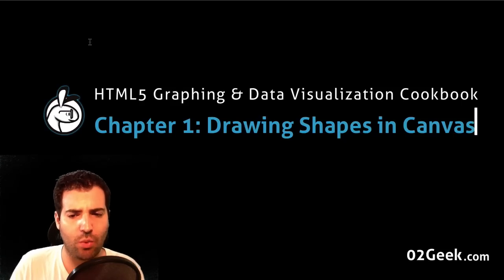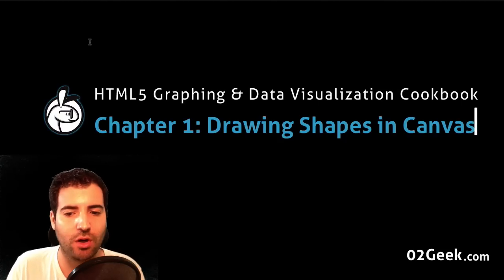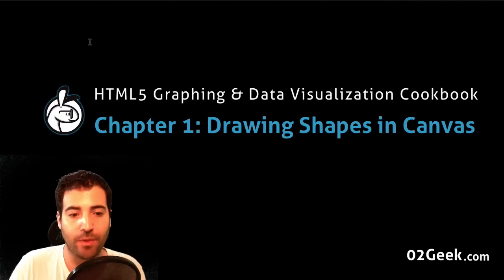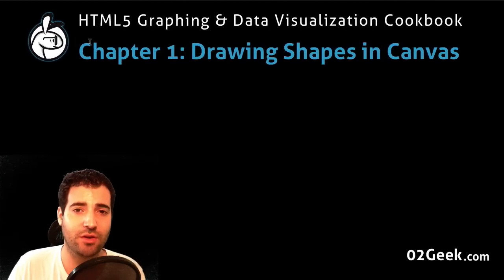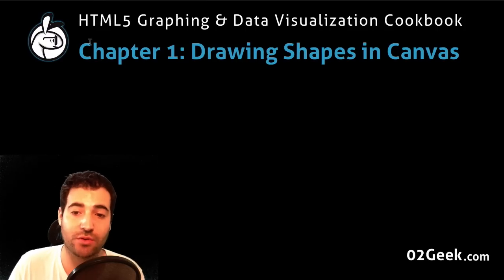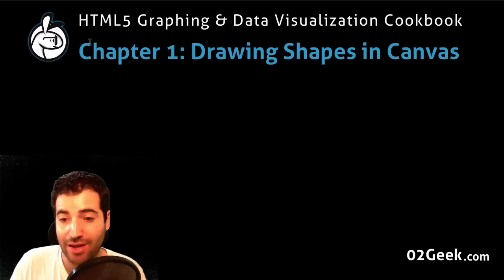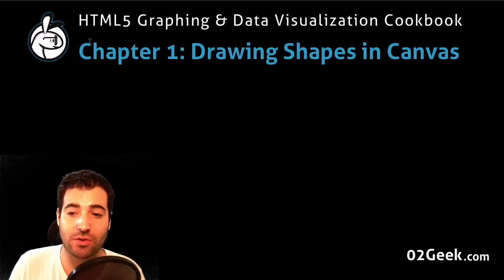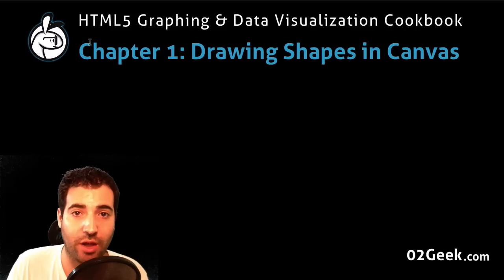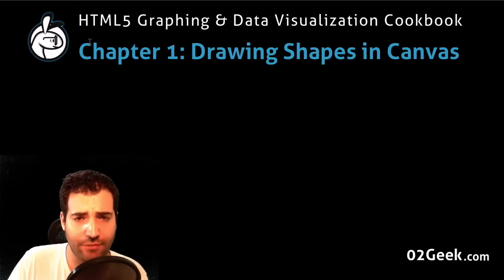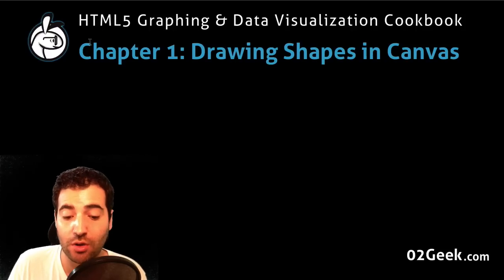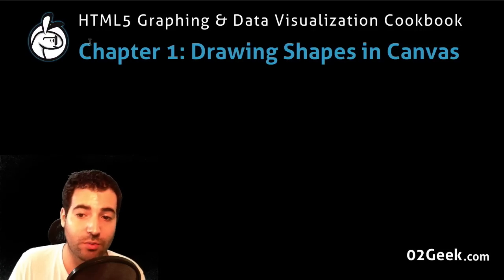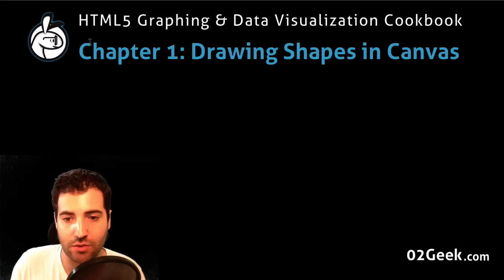Let's understand what we'll be learning in chapter one, which is called Drawing Shapes and Canvas. Canvas was introduced into HTML5 — it's really cool, very fun, and there's a lot of things you can do with it. The whole book is dedicated to canvas: how to use and leverage it, how to work with JavaScript to create graphs and data visualizations, and how to connect data. But before all that cool stuff, we have to get to know how to work with canvas. After this overview I'll also give you a task to make sure you know what you're doing before moving on to the next chapter.